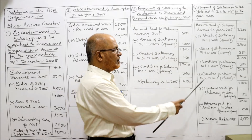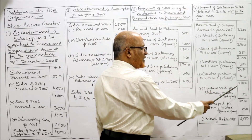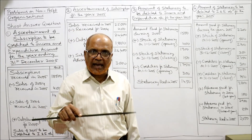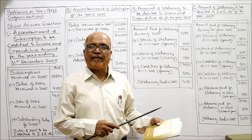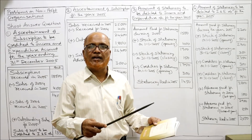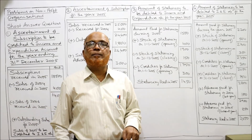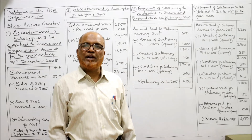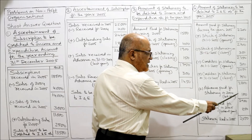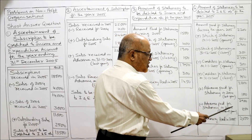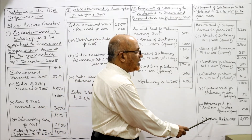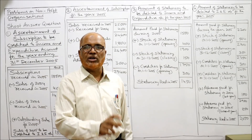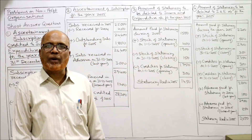Advance paid for stationery at the beginning of the year — last year's advance paid for current year — will be added. Advance paid for stationery at the end of current year — paid for next year — will be subtracted. So opening advance paid is added and closing advance paid is deducted. Add advance paid for stationery in 2004 last year; minus advance paid for stationery in 2005 current year. Ultimately stationery used in 2005 is 2,650. So the amount debited to income and expenditure account for stationery during 2005 is 2,650.